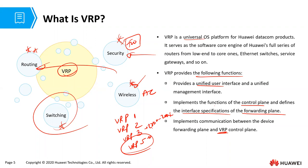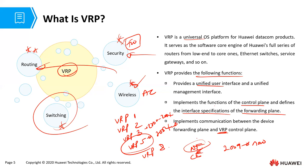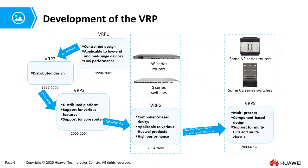Most of our high-end devices are already using VRP version eight. Some NE series routers and some CE series switches — these are heavy-duty core-level routers and switches — run VRP version eight, which came in from 2009 and is still working up to now. VRP version five came in from around 2004 and we are still using it. What we are using in eNSP in this class is VRP version five. Each version has some unique characteristics as illustrated in that slide.